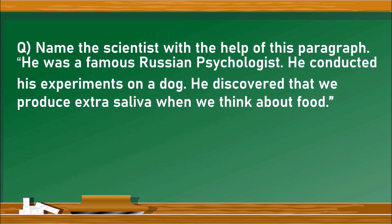Next question. Name the scientist with the help of this paragraph. He was a famous Russian psychologist. He conducted experiments on a dog. He discovered that we produce extra saliva when we think about food. We have already learned about this psychologist in 9th class in the lesson animal behavior. He is Ivan Pavlov.